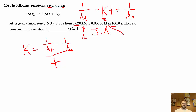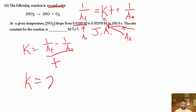0.0035 M is our [A]t and T is 100 seconds. Plugging those in, we get K = 2.36. For a second-order reaction, the units are M⁻¹·s⁻¹.